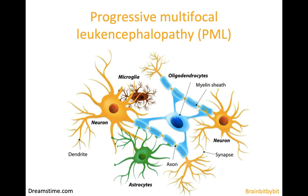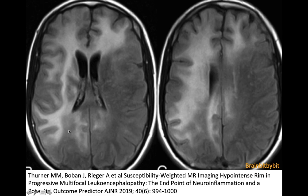I'm going to show images of progressive multifocal leukoencephalopathy, which occurs in immunocompromised patients. It is caused by activation of the JC or John Cunningham polyoma virus that infects oligodendrocytes. It gives asymmetric hyperintensity of the white matter on MRI with involvement of the subcortical U-fibers.